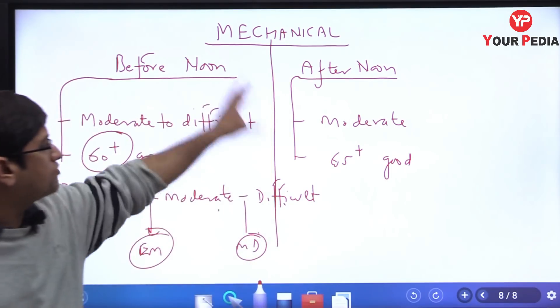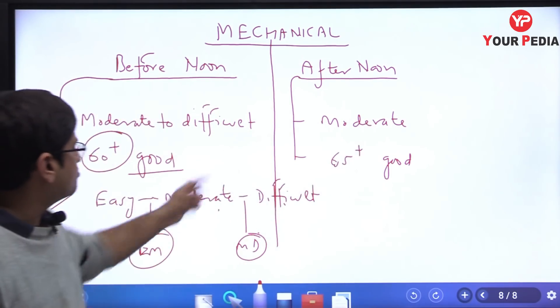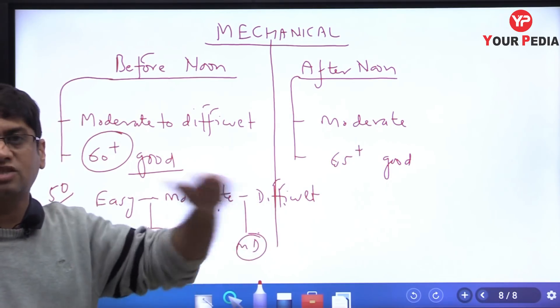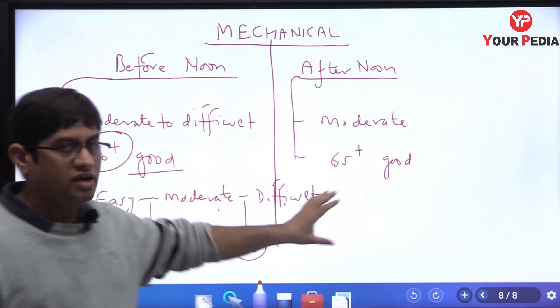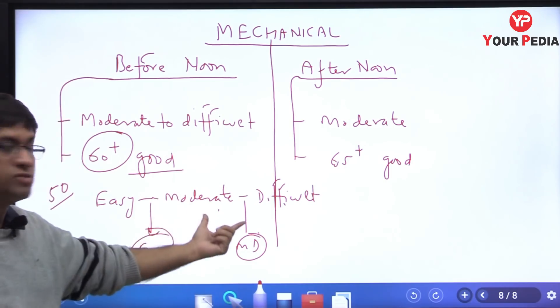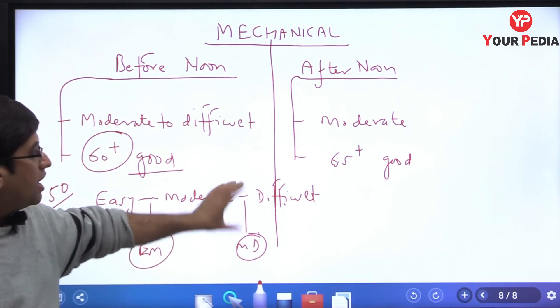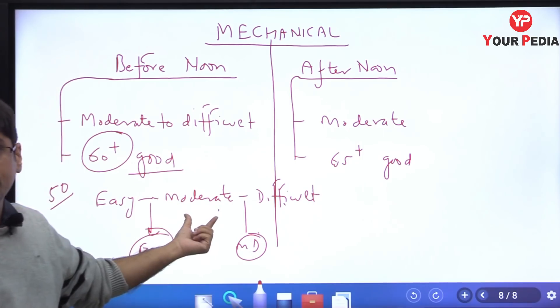Let me tell you now afternoon, the paper that was moderate. I gave you the basically steps: easy, moderate, difficult, three steps. So before noon was moderate difficult and afternoon was moderate, you understand?